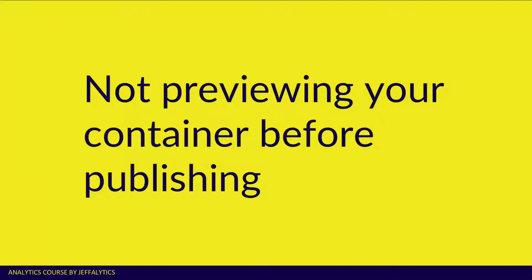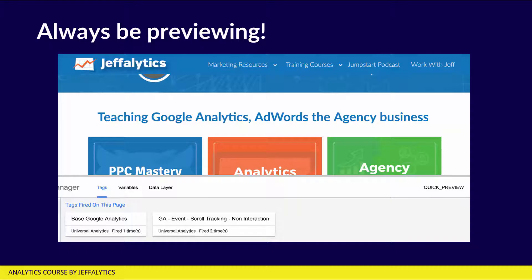So I'm going to harp on previewing a little bit more here and say, make sure you preview your container before publishing. Here we are on the Jefflytics website, and I wanted to test that scroll tracking was working exactly how I thought it should work and how I wanted it to work. I just did a preview, and yes, I can see scroll tracking is working. I went further down the page, and I verified that it's working exactly as intended.